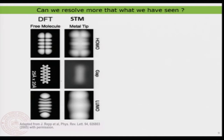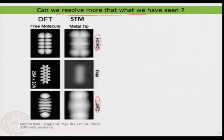What we have seen was that we can resolve the molecular orbitals depending on the bias that you apply — you are actually imaging the HOMO or LUMO of the molecule. Now the question is, can we resolve a bit more than this? We are always ambitious, and that is the reason why we are studying something this interesting.